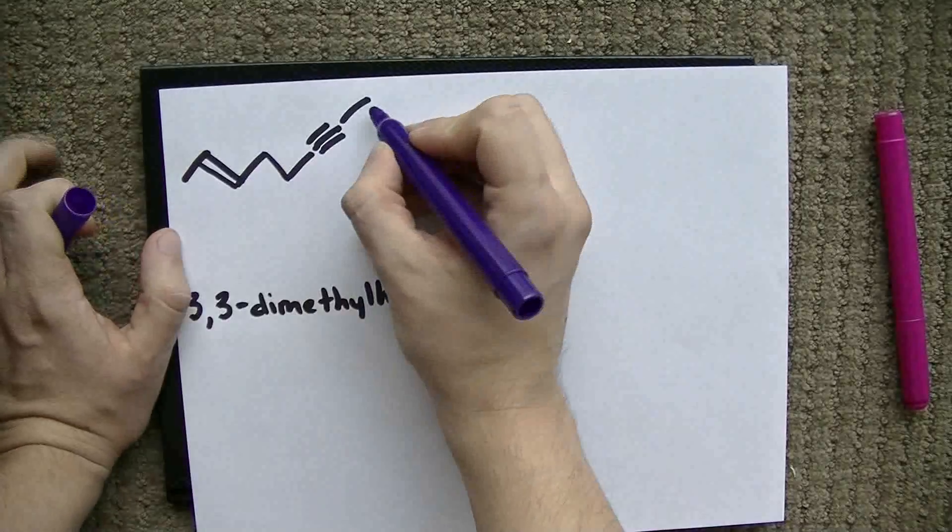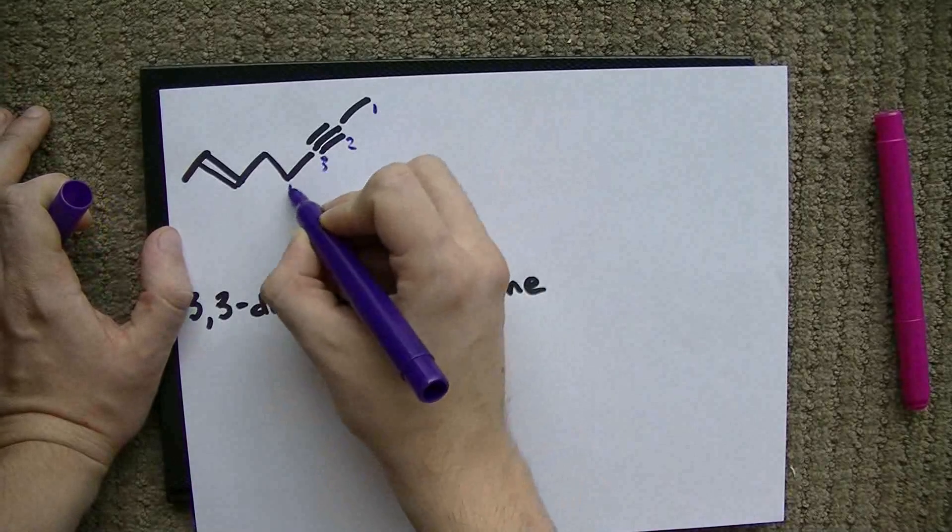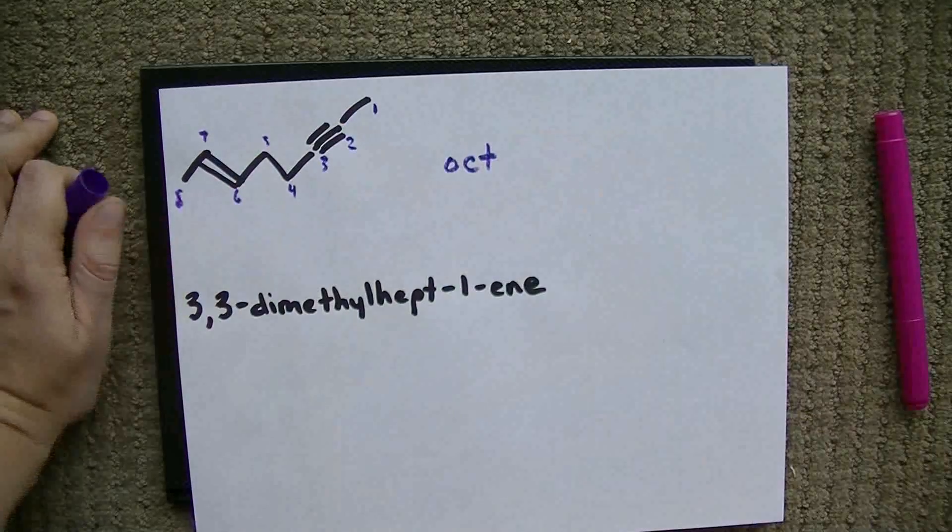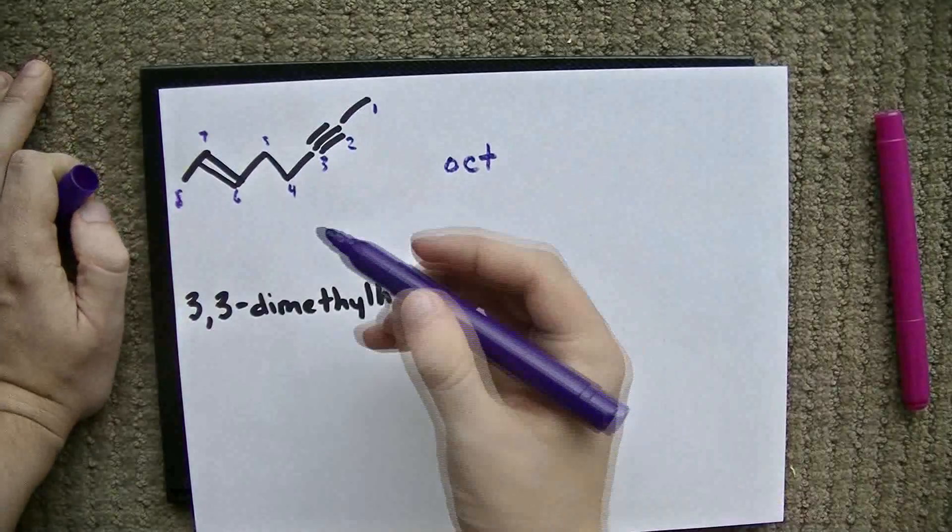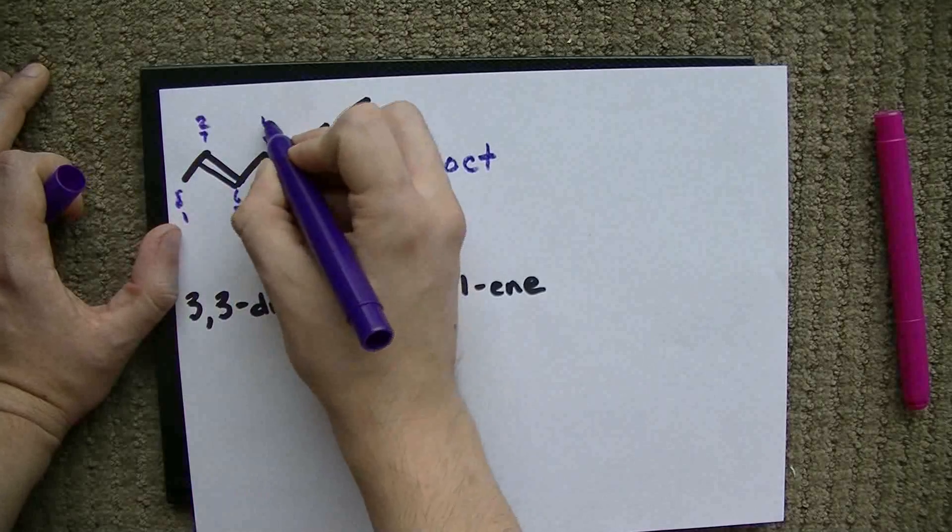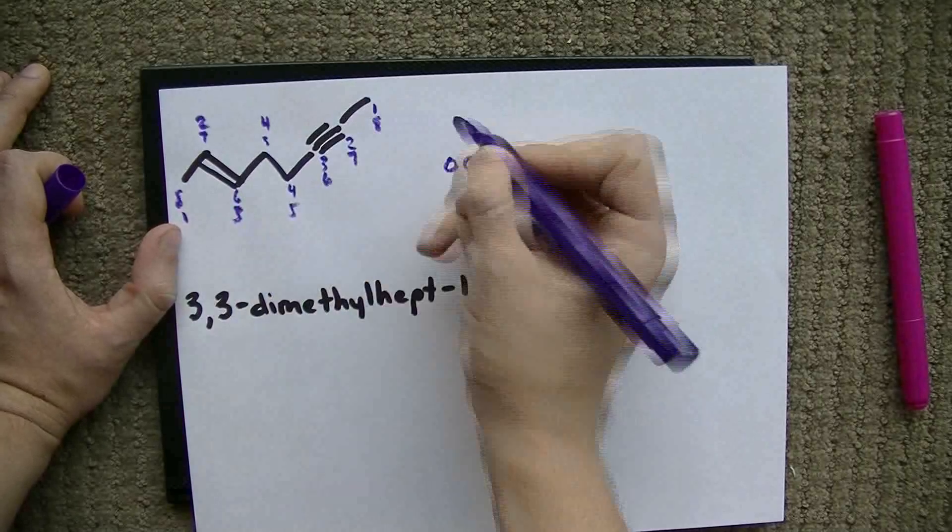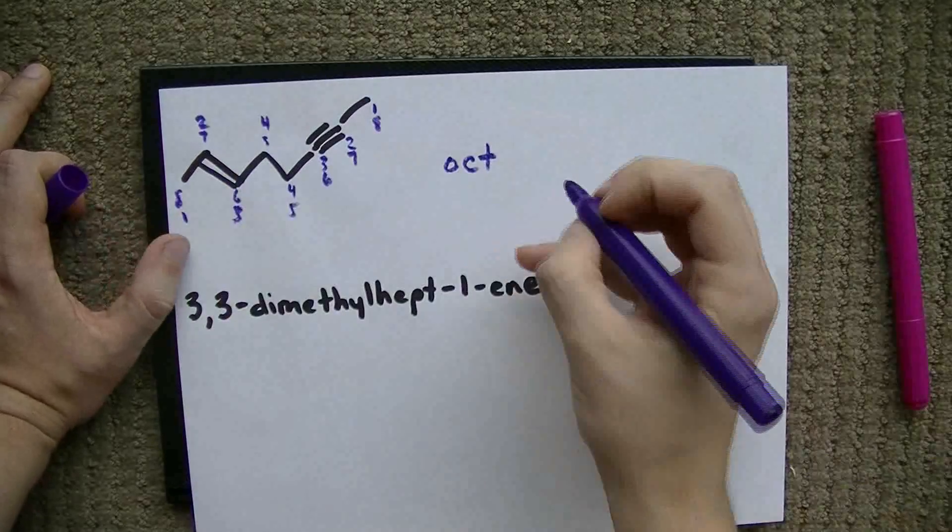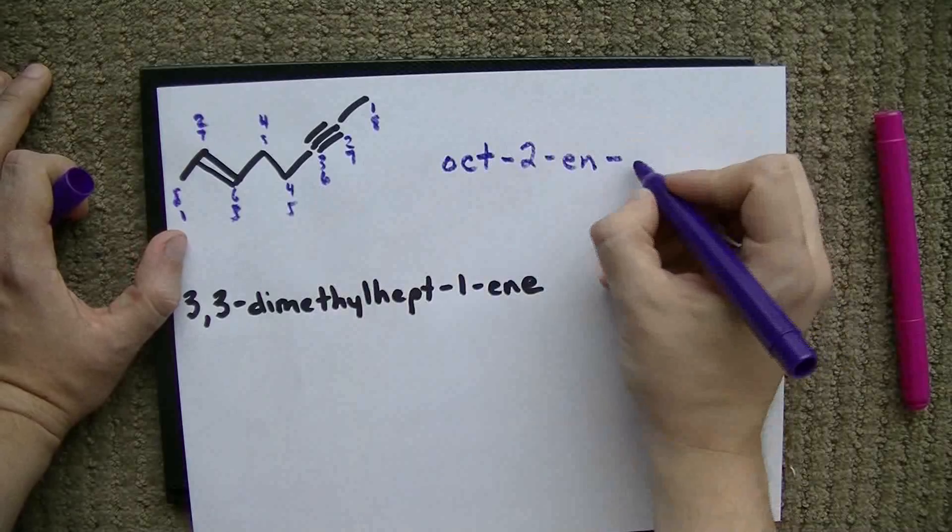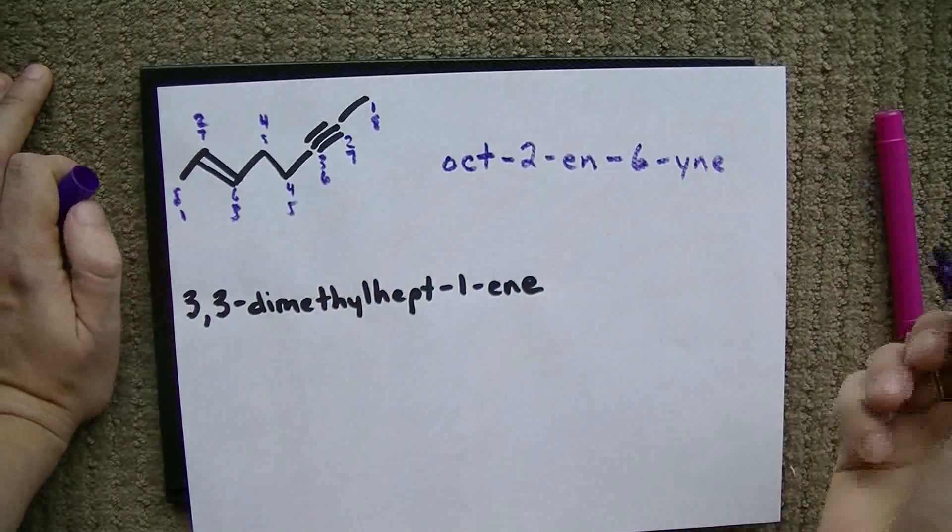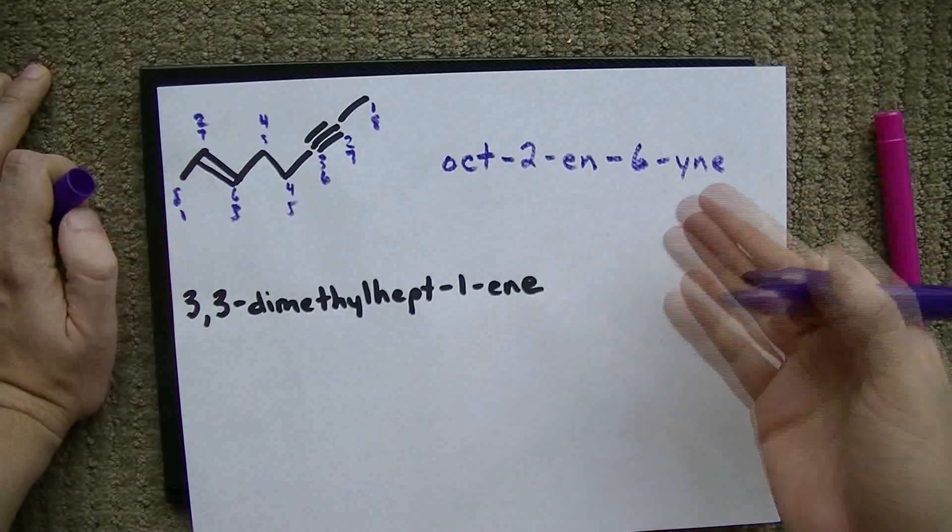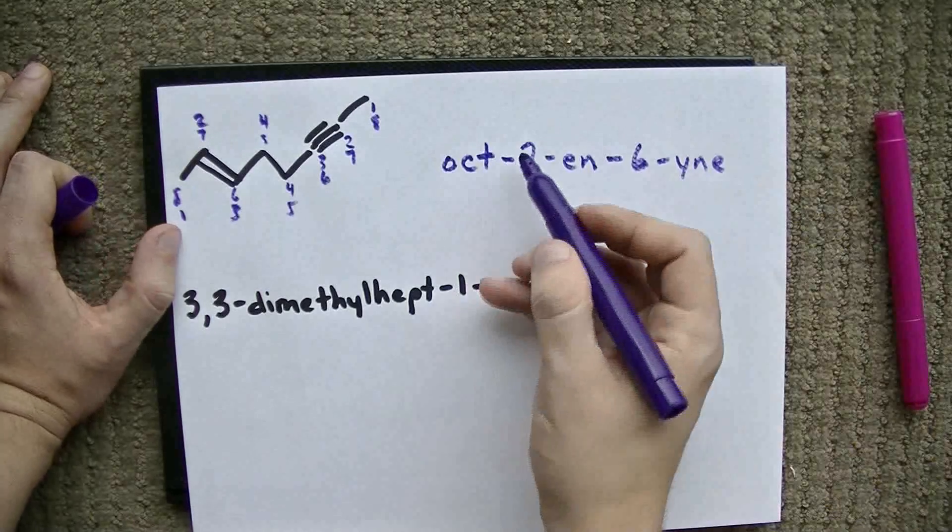We've got carbon 1, 2, 3, 4, 5, 6, 7, 8. This is definitely an oct. But, we have a double bond starting at carbon. Uh-oh. 1, 2, 3. See how I always have to figure out which one has the lowest number? I'm going to give the ene the lowest number here. Oct-2-ene and 6-yne. Now, there's this thing where if you have anything after the ene, you're supposed to cut off the extra e. Just trust me on that for now. And we have oct-2-en-6-yne.